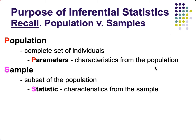A parameter is any characteristic from a population — for example, the mean or standard deviation of the population. On the other hand, a sample is a small part of the population that should represent the population — it is a subset but a representative. Any characteristic gotten from the sample is called a statistic.